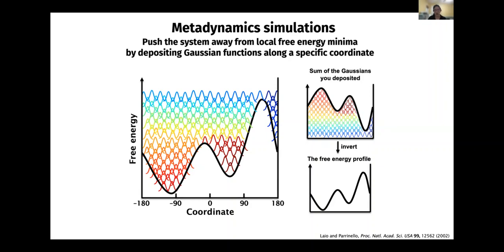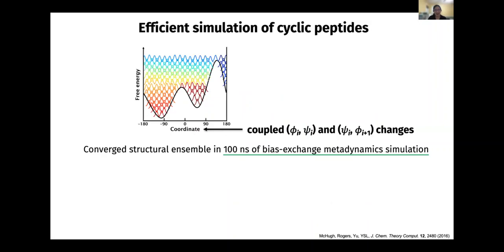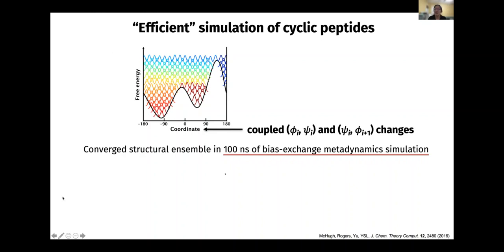This is the method we use to run simulations efficiently for cyclic peptides. We can now obtain a converged structure ensemble in 100 nanoseconds, which takes about one day on a decent compute node. Depending on how many nodes you have, you can run something like 50 sequences in a week. But if you go to any biotech or pharma company, they'll say: 50 a week? We want you to do 10,000 in a day. So this is not feasible for large-scale screening.